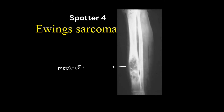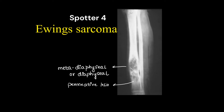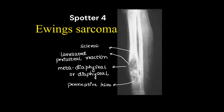The fourth spotter is Ewing's sarcoma, which shows meta- or diaphyseal location. It is a permeative lesion without well-defined margins. There can be lamellated periosteal reaction; sometimes it can be sunburst pattern or Codman triangle. There will also be associated sclerosis of the bone.